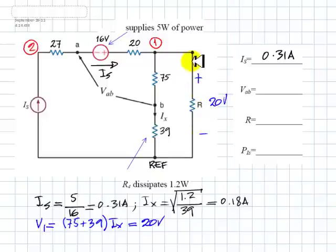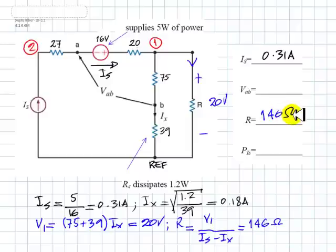If we know this current, this one here, we could divide 20 by the current and obtain the value of the resistor. What is that current? All that current is Is minus Ix. Both are currents that we know. And let's do that. Let's say this resistance value is this voltage V1 divided by the current in the resistor, which is Is minus Ix. All of those are known values. V1 is 20, Is is 0.31, Ix is 0.18. So we compute that and get 146 ohms. That's good. That is the resistance, 146 ohms.